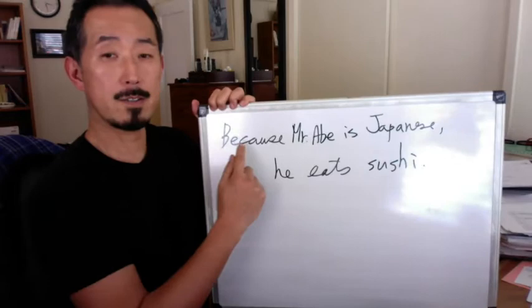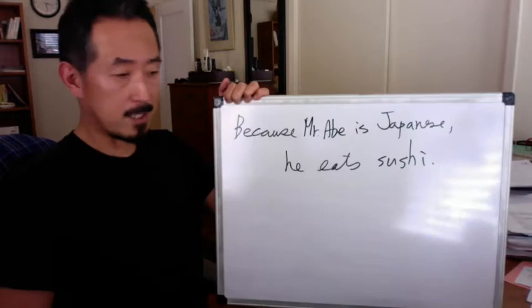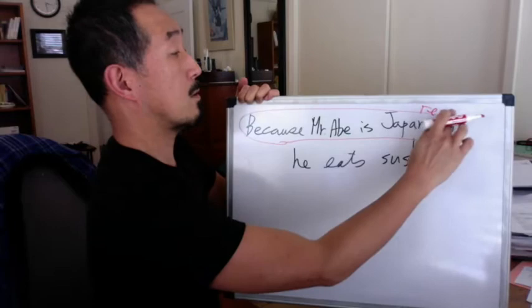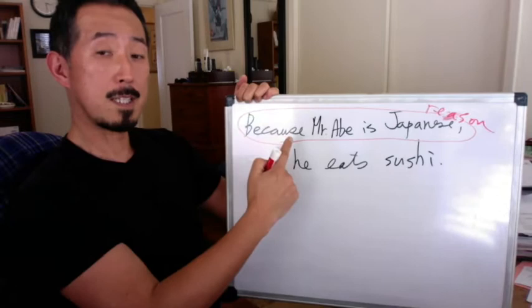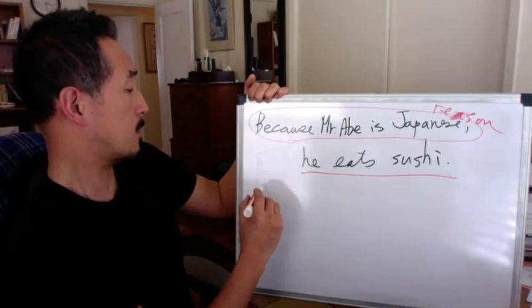Okay, this is an example sentence. Because Mr. Abe is Japanese, he eats sushi. Well, that's a really racist sentence, but just for the sake of your practice. So this is a reason — Mr. Abe is Japanese, that's a reason why he eats sushi.